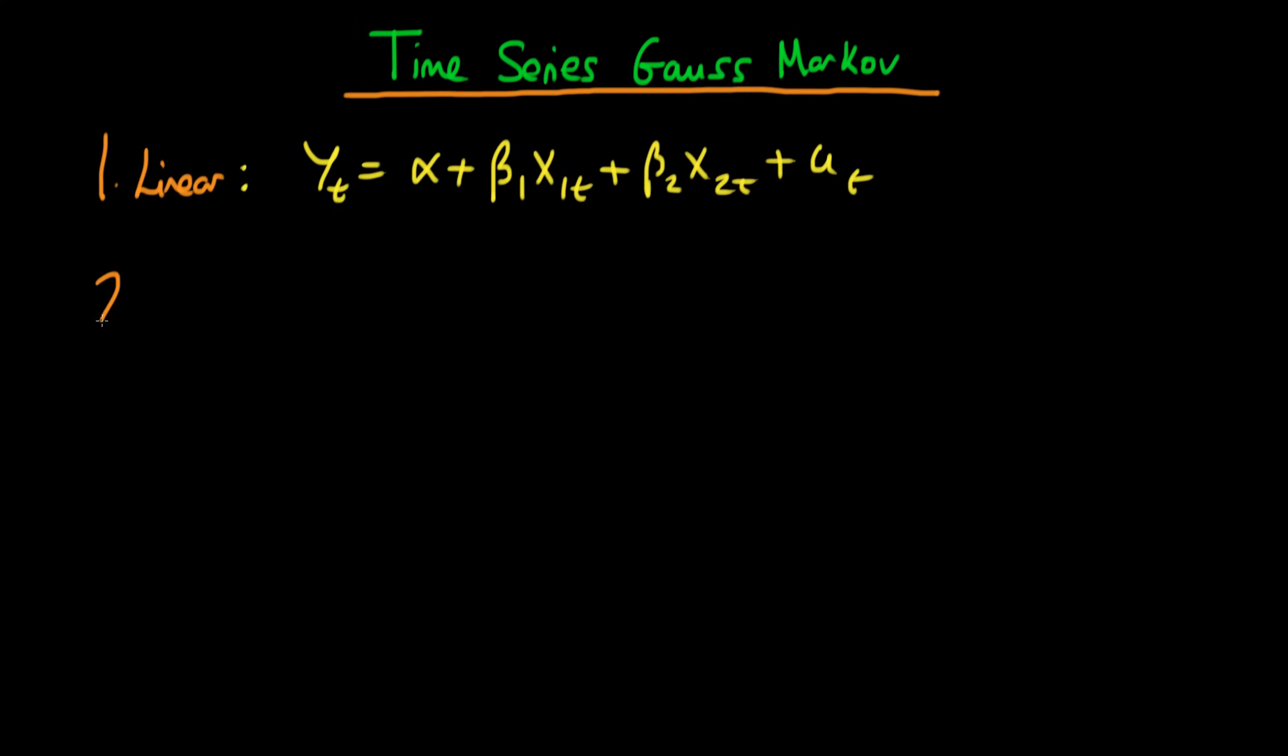The second Gauss-Markov condition is that we require a zero conditional mean of errors. And I'm just going to state exactly how this differs from the cross-sectional case. In the time series case we actually require that the expectation of our error ut given all observations of all other variables at all points in time.